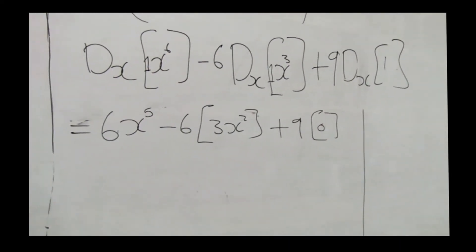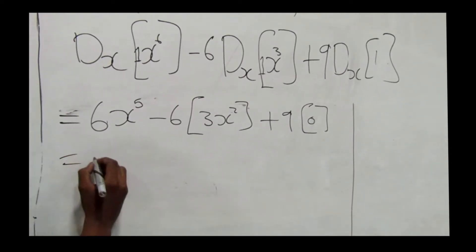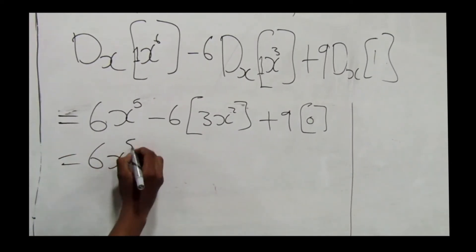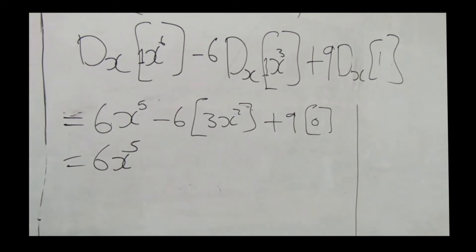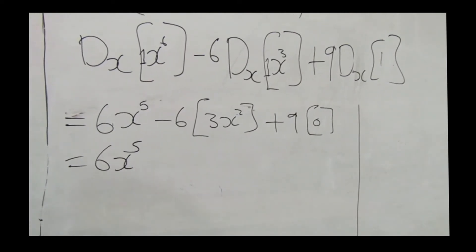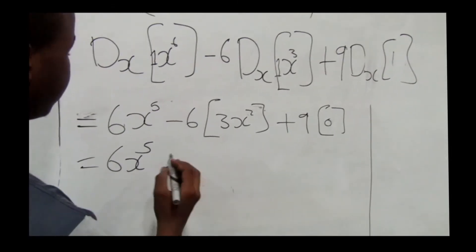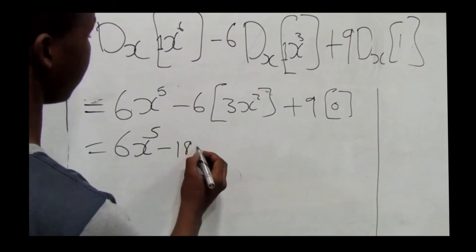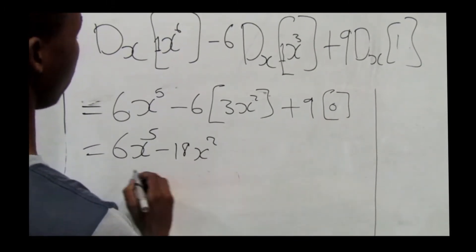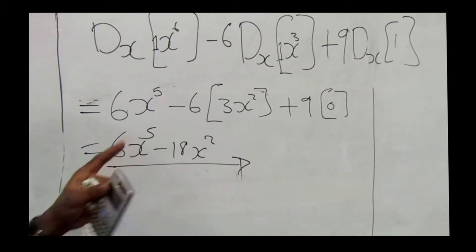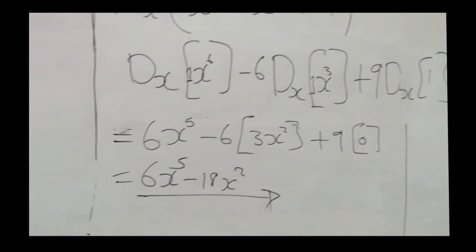So our final answer is 6x to the power 5, then negative 18x squared, and 9 times zero gives zero. This is our answer for number one.